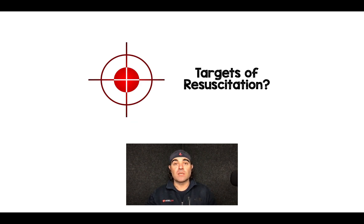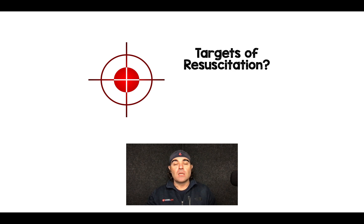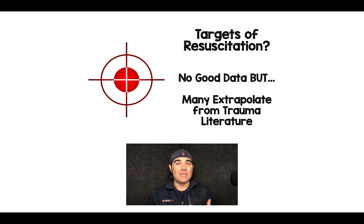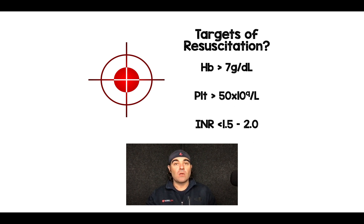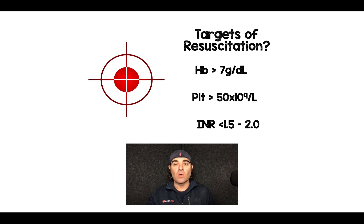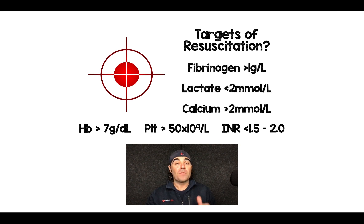In terms of targets of resuscitation for GI bleed, there's really no good data to help us, but many people extrapolate from the trauma literature. Those targets include: hemoglobin greater than 7, platelets over 50,000, INR less than 1.5 to 2 depending on where you work, fibrinogen greater than 1 gram per liter, lactate less than 2, and for patients requiring massive transfusion protocol, don't forget calcium supplementation.